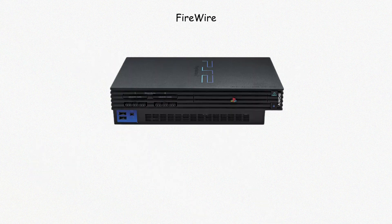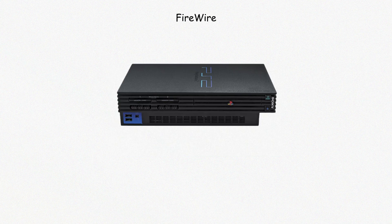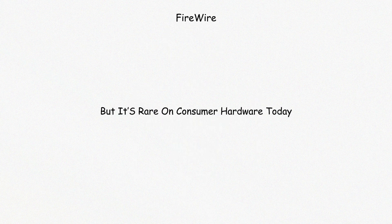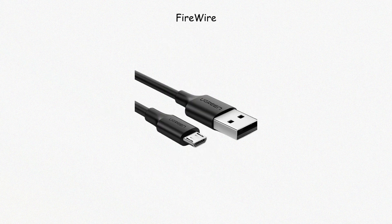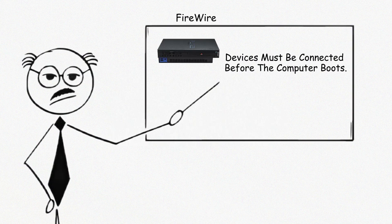PS/2 ports are round connectors used for connecting keyboards and mice. They were color-coded — purple for keyboard, green for mouse. PS/2 allows direct communication with the motherboard, avoiding some of the latency or polling delays seen in USB. Some business systems still include PS/2 for compatibility with older peripherals, but it's rare on consumer hardware today. Unlike USB, PS/2 does not support hot plugging — devices must be connected before the computer boots.